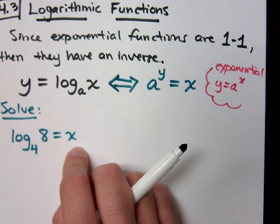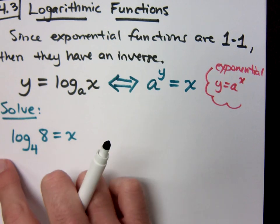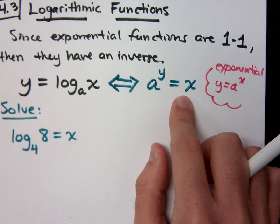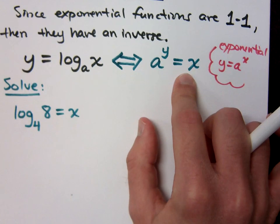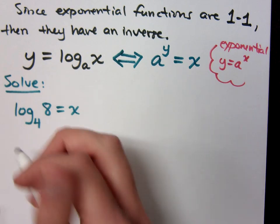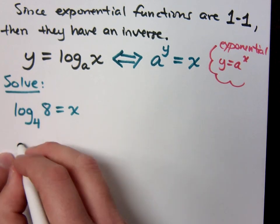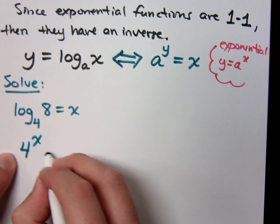So log to the base 4 of 8 is equal to x. I'm going to show you how to solve something like this. The way we solve this is to get it out of this logarithmic form and put it back in this exponential form. So watch what we have here. The base is right here, so 4 to the x, right, is equal to 8.